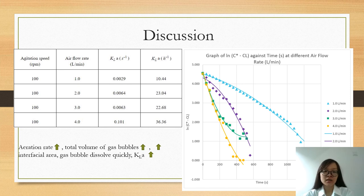We can observe that the KLA values are increased with the increase of aeration rates. The main reason is that at higher aeration rates, the total volume of gas bubbles in the bioreactor will increase which leads to higher interfacial area between gas and liquid.